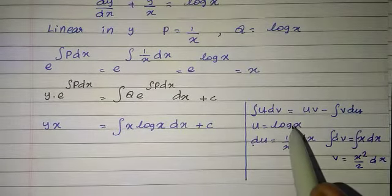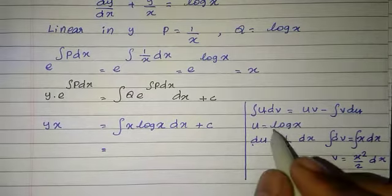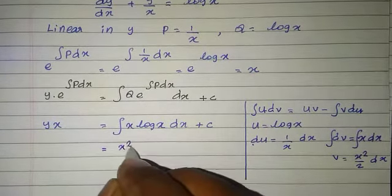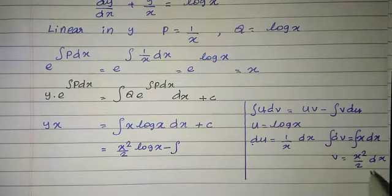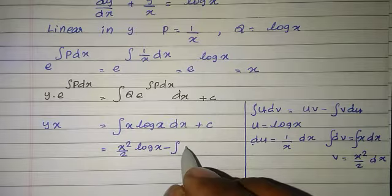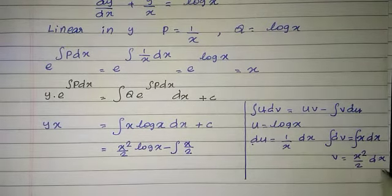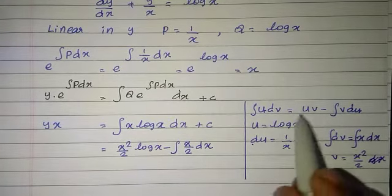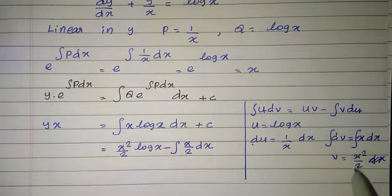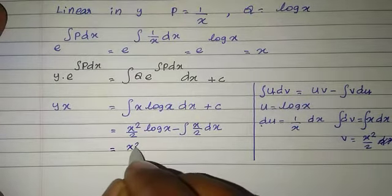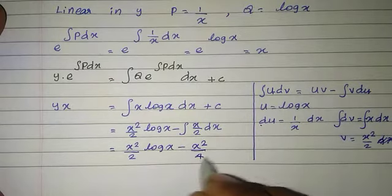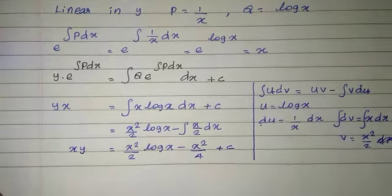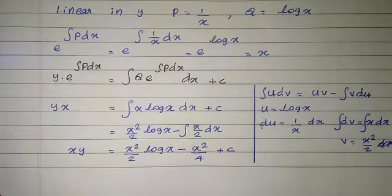Substituting into the formula, integral u dv equals uv minus integral v du: that is x square by 2 into log x, minus integral of x square by 2 into 1/x dx. Simplifying, x cancels to give x by 2, so the result is x square by 2 into log x minus x square by 4 plus c. Therefore, xy equal to x square by 2 into log x minus x square by 4 plus c.